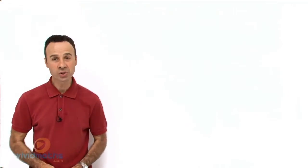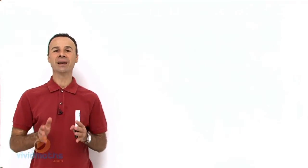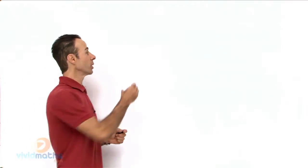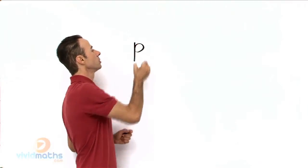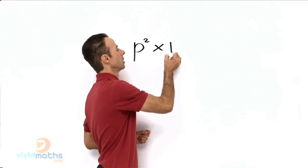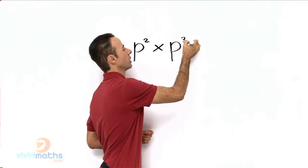I would like to introduce you to the basic index laws, and the first one when multiplying is like this. Let's say, for example, we have a pronumeral p to the power of 2 times p to the power of 3.